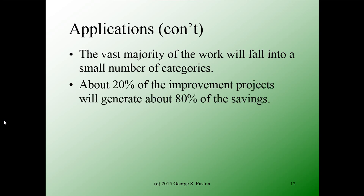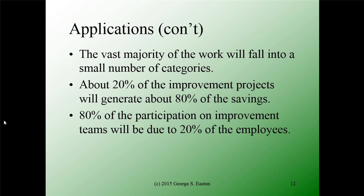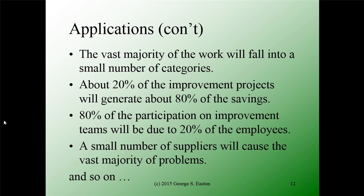About 20% of improvement projects will generate about 80% of the savings. About 80% of the participation on improvement teams will be due to 20% of the employees. A small number of your suppliers will cause the vast majority of your problems. The idea just goes on and on — it's so widely applicable throughout Six Sigma and really throughout business.